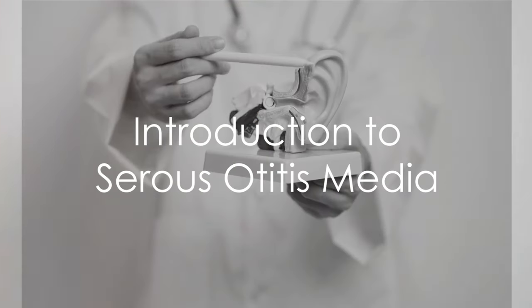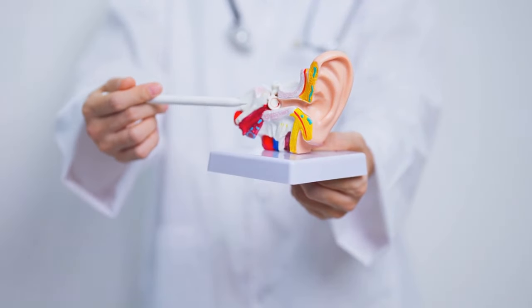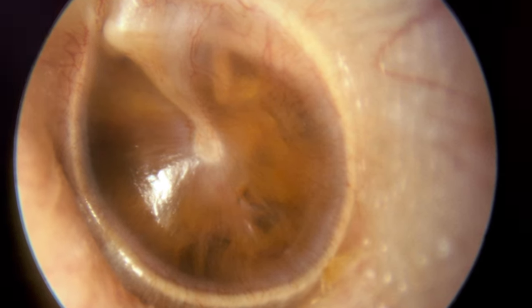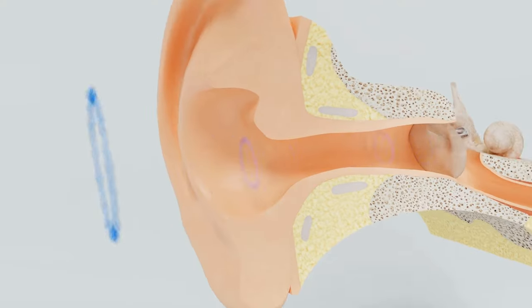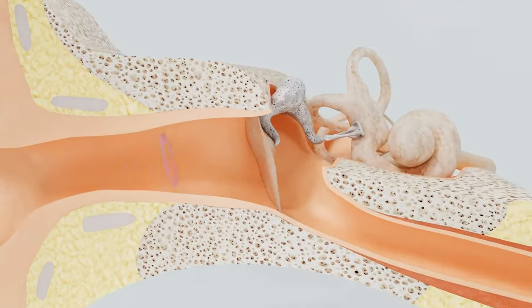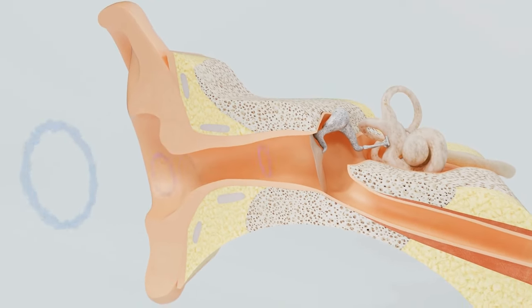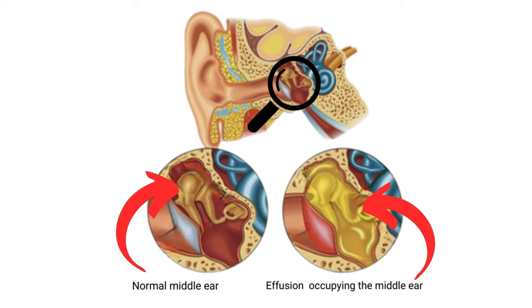Have you ever heard of serous otitis media? Sounds complex, but it's a common condition especially amongst children. This condition, also known as otitis media with effusion, is characterized by the presence of fluid in the middle ear without any signs of an acute infection. The middle ear is that little space behind the eardrum where tiny bones transmit sound waves to our inner ear. Imagine this space filled with fluid, and you've got a basic idea of what serous otitis media is.